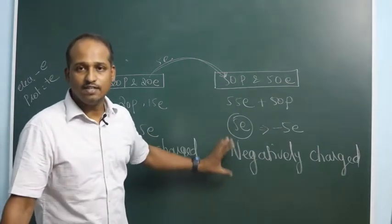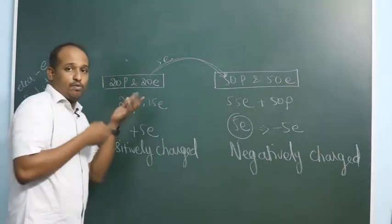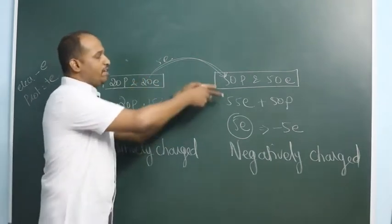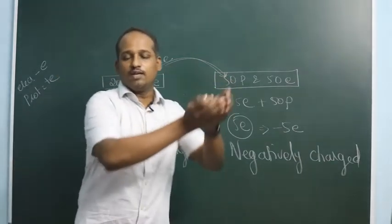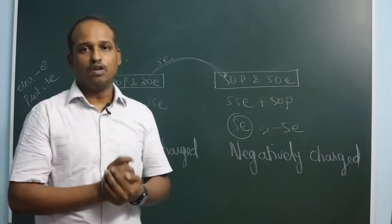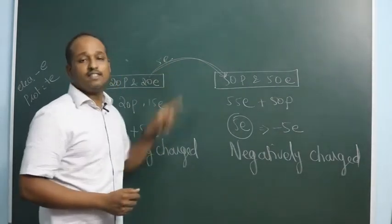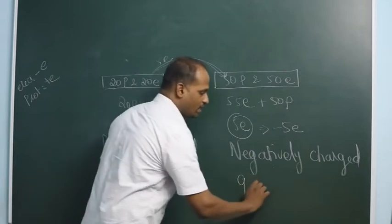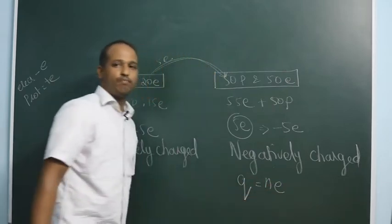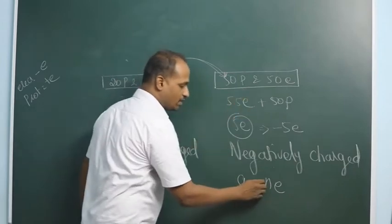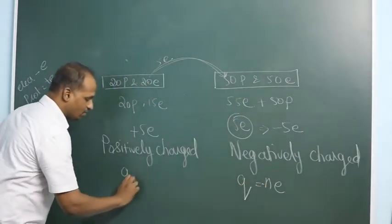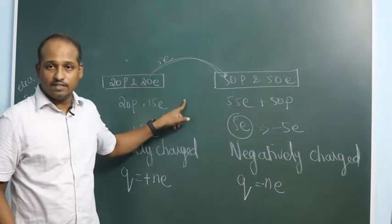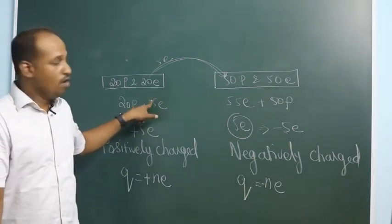Now you can understand how charge is quantized. When an electron jumps, the entire full electron jumps — not half or three-quarters of an electron. Because of that, the total charge of the negatively charged material is q = −ne, where n is the number of electrons that jumped in. Similarly, the material that lost n electrons has charge +ne.